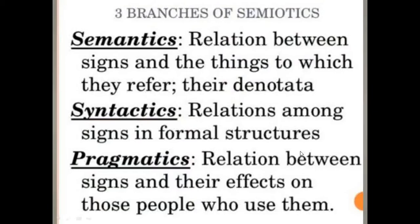We saw how semiotics helps in everyday relations and is roughly divided into three branches: semantics, syntactics, and pragmatics. Semantics deals with the sign and the things to which they refer — the meaning-making. Syntactics helps you understand the relationship between signs within formal structures. And pragmatics would be how signs or a set of signs affect the one who is using them and the one upon whom it is being used.